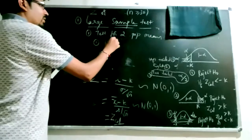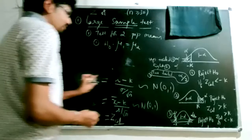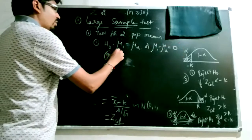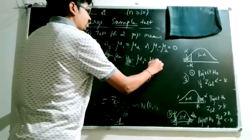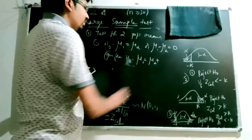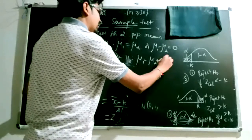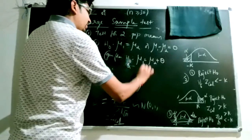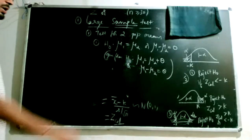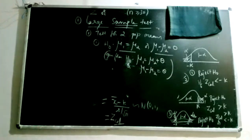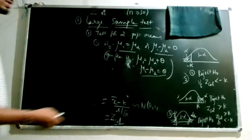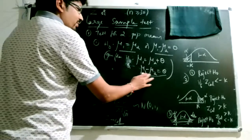For the second Z-test (two population means), the null hypothesis states mu1 equals mu2, or more generally, mu1 minus mu2 equals theta (some constant, often 0). We are concerned with the value of theta rather than individual mu values. Close values of x1-bar and x2-bar may or may not indicate a real difference — hypothesis testing determines whether the observed difference is real or just by chance.